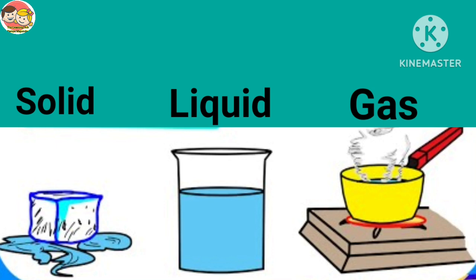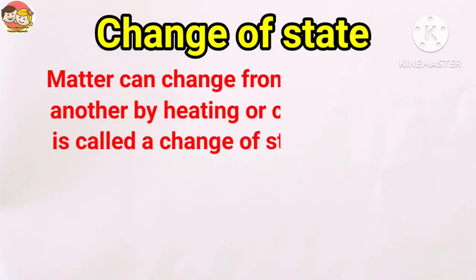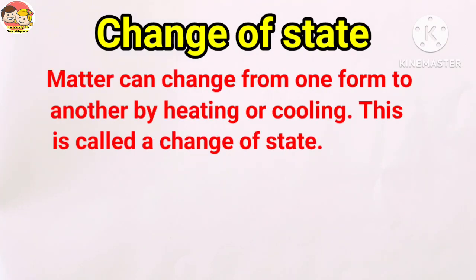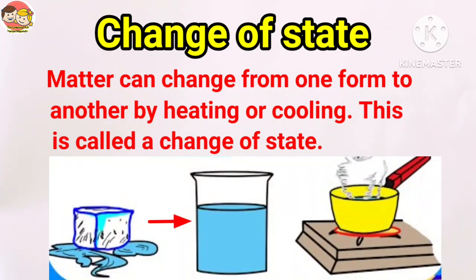So water is present in mainly three states: solid, liquid and gas or vapor. Matter can change from one form to another by heating or cooling. This is called a change of state — like solid to liquid, liquid to gas, gas to solid, and also in the reverse direction.